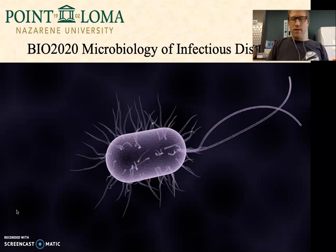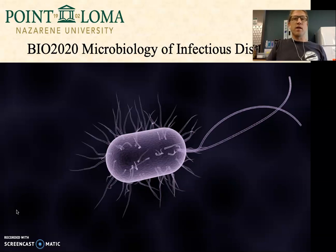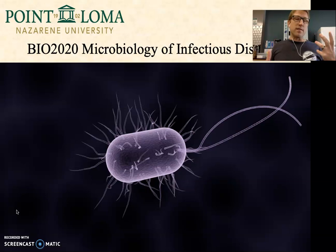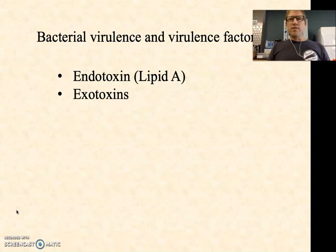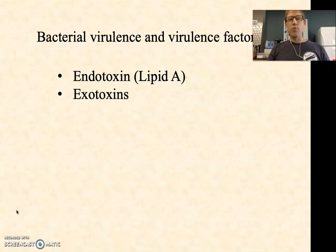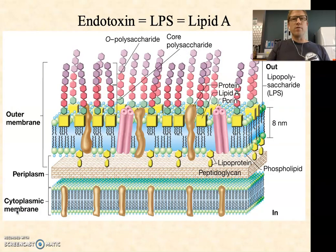Welcome to part three of this four-part series on Microbiology of Infectious Diseases. We're talking about virulence factors and bacterial virulence. Keep in mind that any pathogen can have virulence factors, but we're focusing on bacterial virulence factors right now, not viral, not eukaryotic. In this episode I want to talk about endotoxin, which generally refers to lipid A, and then a variety of exo or secreted protein toxins. Let's start first with endotoxin.